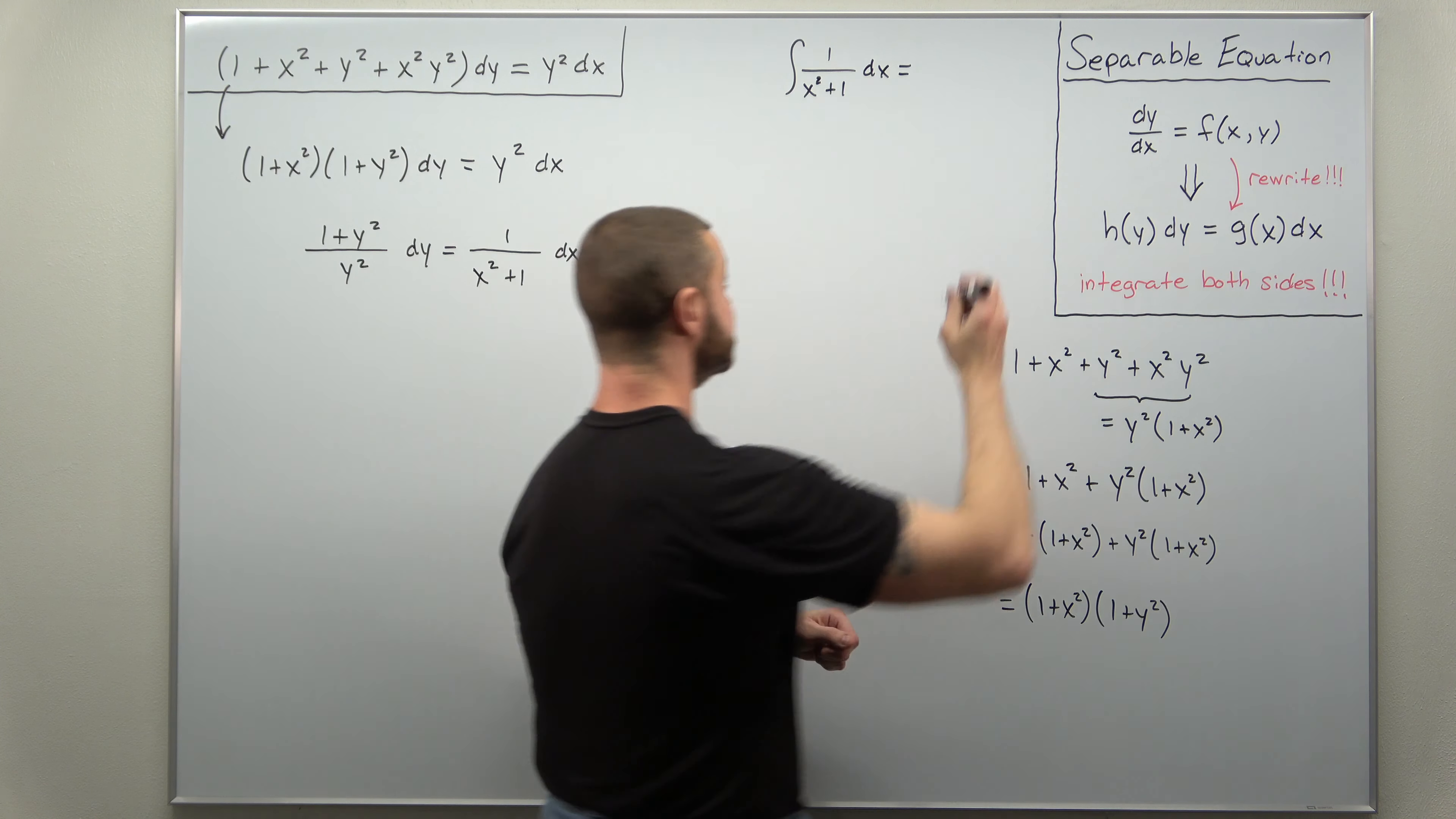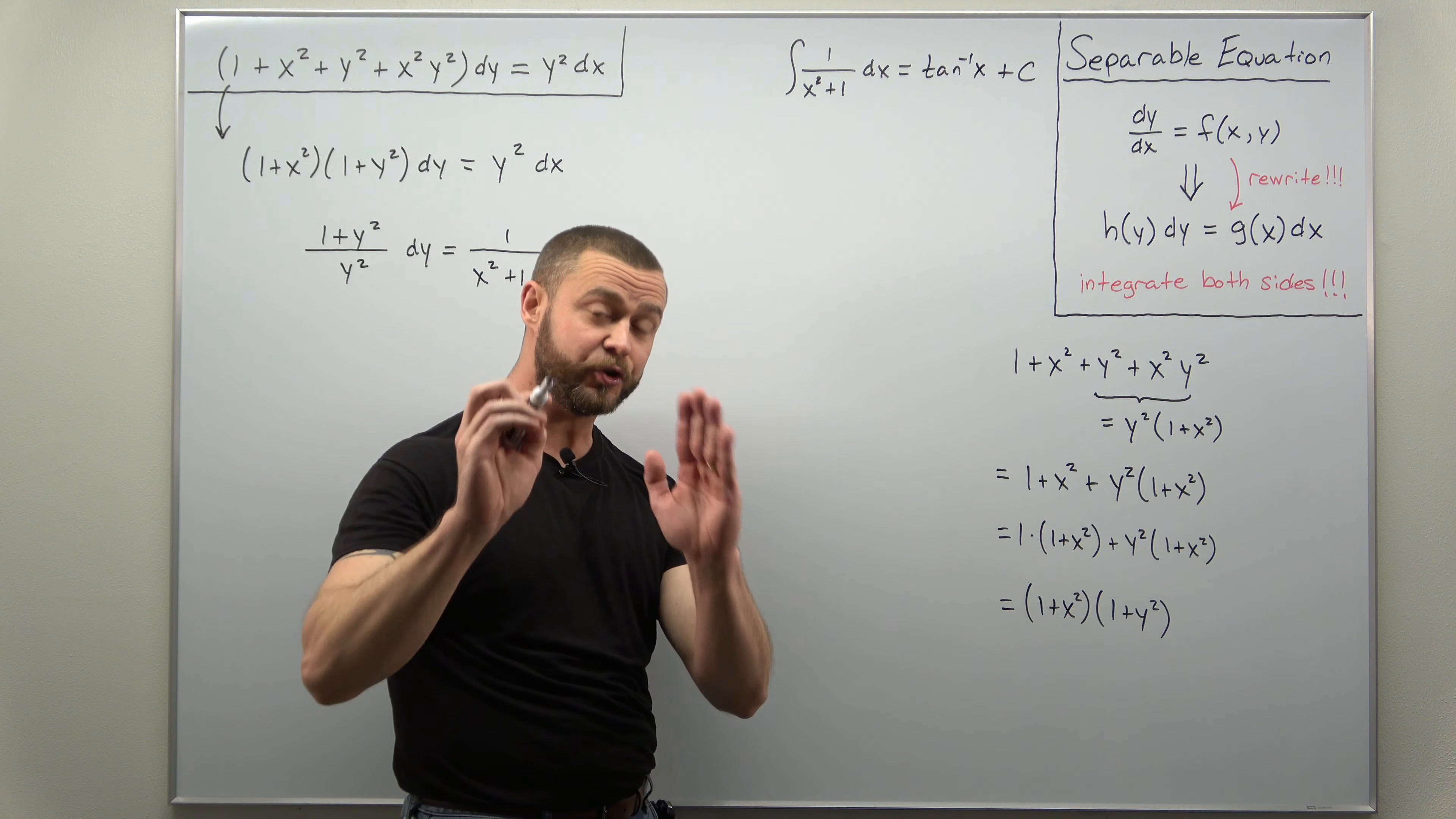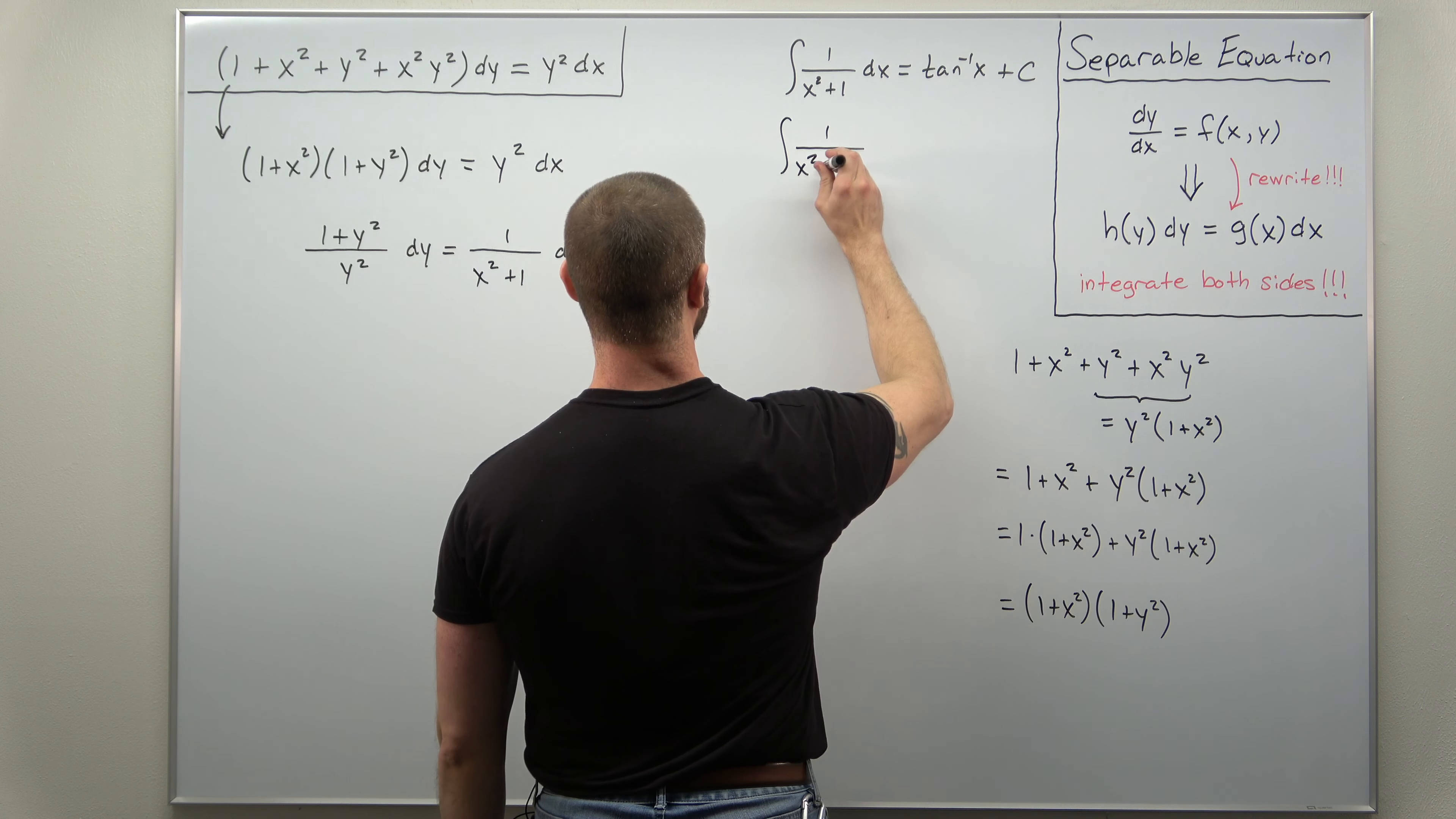That comes out the inverse tangent of x. And a related version which is good to review, which we'll state right now, is what happens if there's another number in that denominator other than 1. The other more general version that you'll want to know.